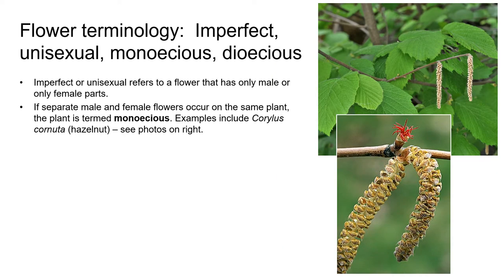Imperfect or unisexual refers to a flower that has only male or only female parts. If we have separate male and female flowers on the same plant, the plant is referred to as being monoecious — derived from the Greek words for 'single' (mono) and 'house' (aecious). A good example is the California native shrub Corylus cornuta, the California hazelnut, where we have male flowers and a separate female flower on the same plant.